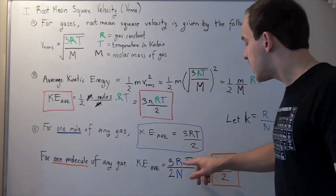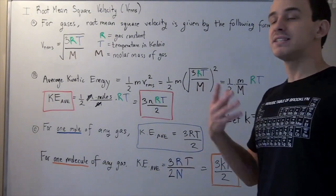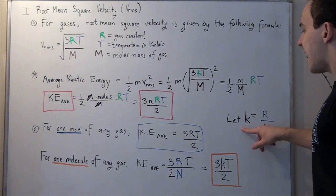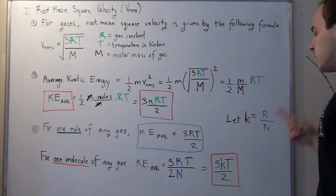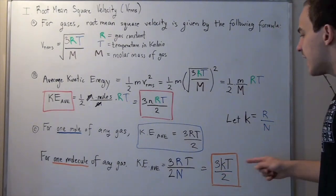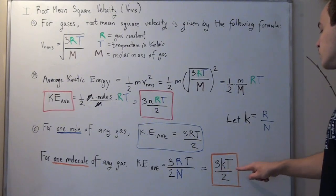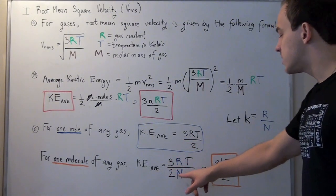The reason I singled out the R and the N is because this is known as the Boltzmann constant. In other words, scientists use some value K that equals R divided by N. So we replace this R divided by N with K, called the Boltzmann constant. And our equation becomes 3 times K times T over 2, which is the same thing as saying 3 times R times T divided by 2 times N.